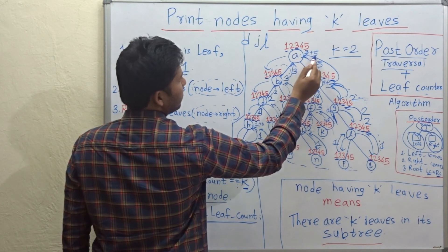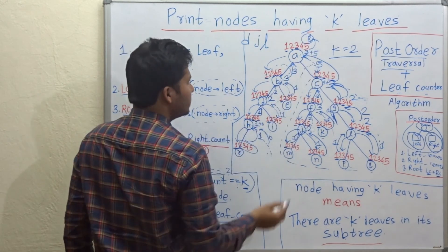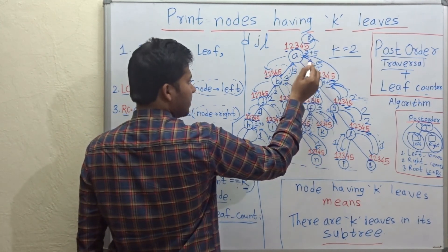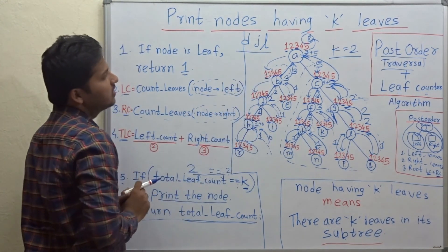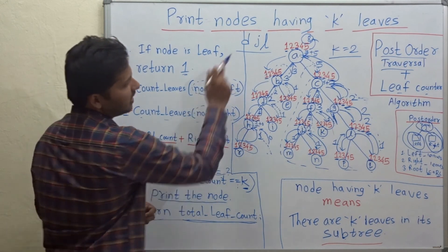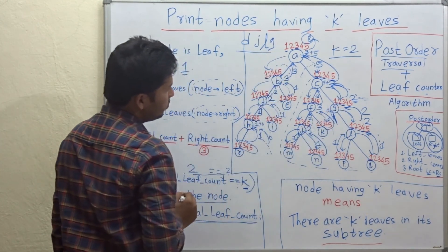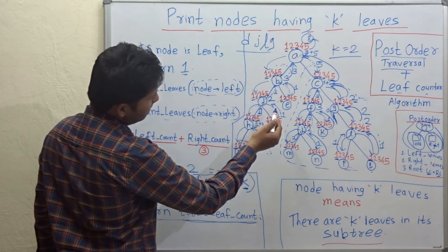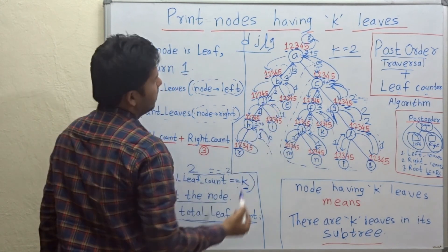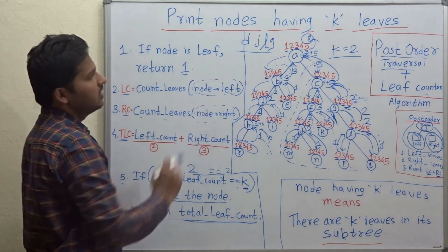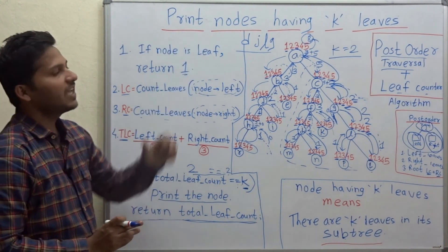At the root, left count plus right count is 3 + 5 = 8 — that is the total number of leaves in the whole tree. We also need to print G because 2 equals 2 for that node. So the final output nodes which have k leaves, where k equals 2, are D, J, L, and G. These are the nodes which have 2 leaves each in their subtrees. This is how we print nodes having k leaves.